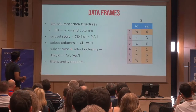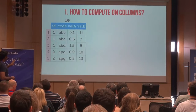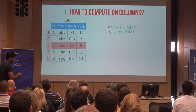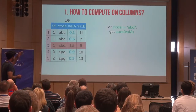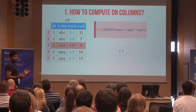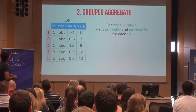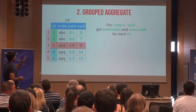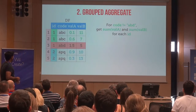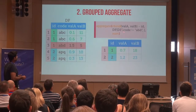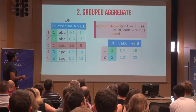I'd like to talk about three different problems — three different ways base R approaches certain data manipulation tasks. The first is a very simple example: you have a DataFrame with four columns, and for code not equal to 'ABD' you'd like to get the sum of column valA — that would sum to 1.9. In base R, you subset the rows, select the column, and wrap the expression with sum. For a group aggregate operation — sum of valA and valB grouped by ID — you use the formula interface for aggregate, subset the rows, and bind the columns together.